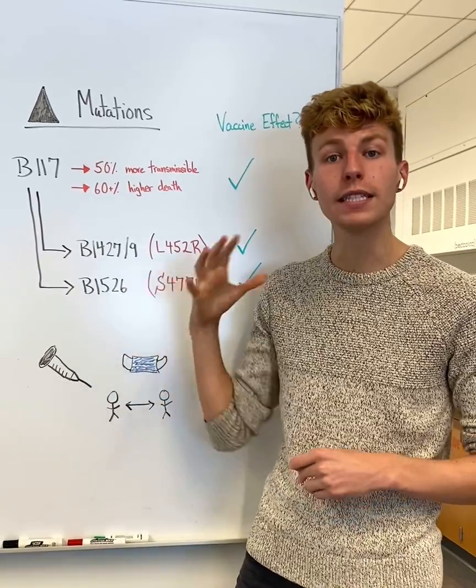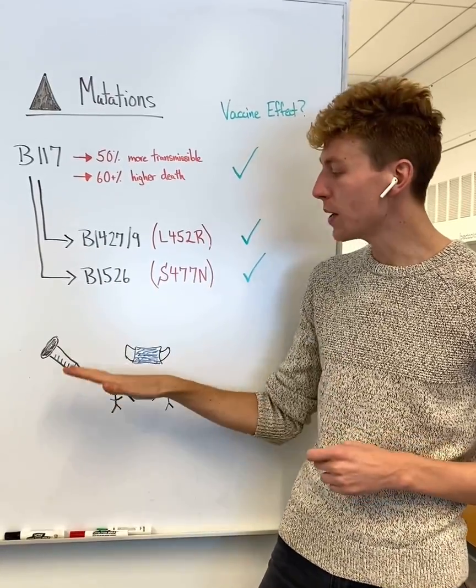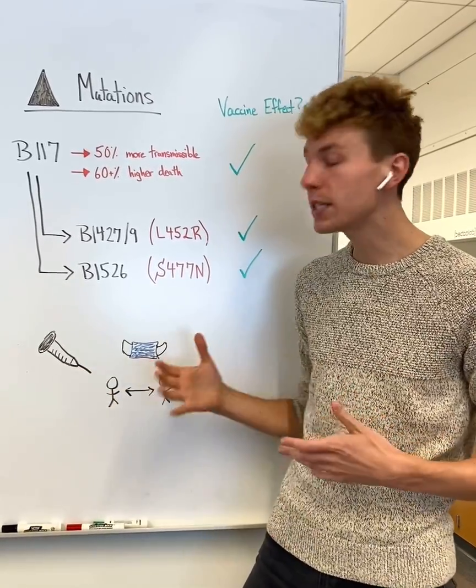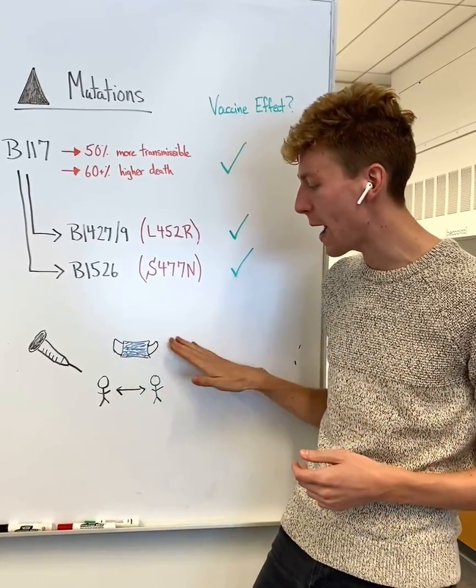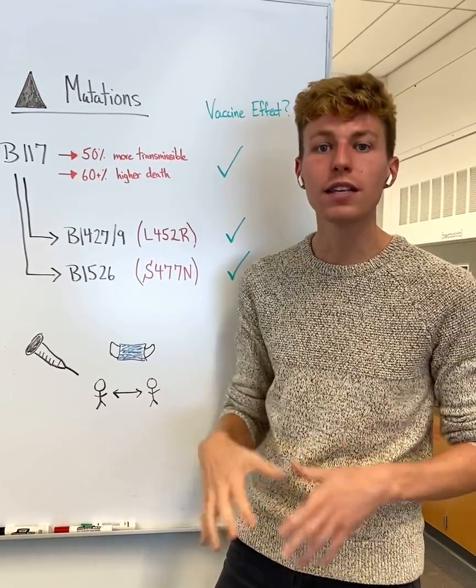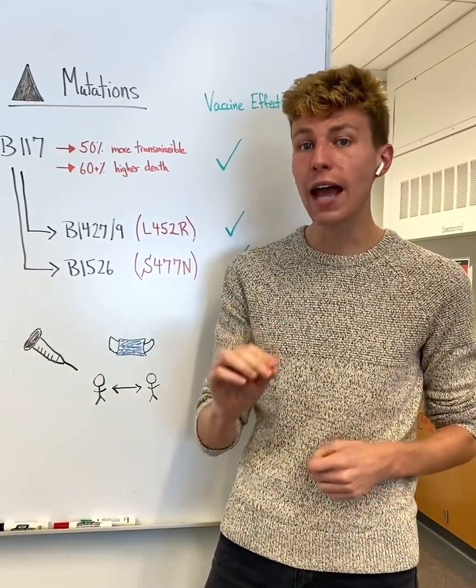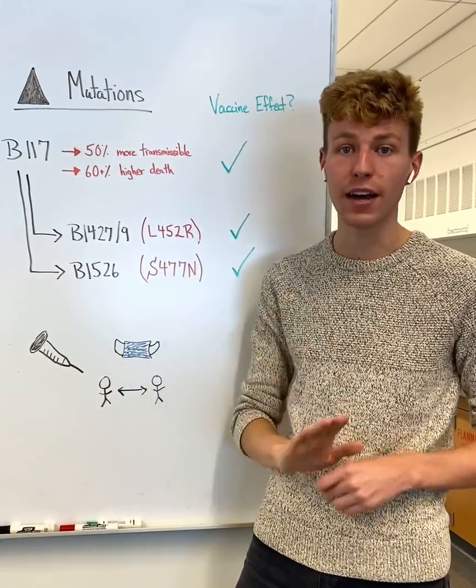But to avoid continuous mutations that could escape these vaccines, we need to ensure that individuals are vaccinated when it's their time and that we still follow proper protocols to keep us safe, such as masking and social distancing. These are simple ways to keep yourself, your family, and the entire community safe and to avoid severe mutations that could escape the protection of this vaccine.